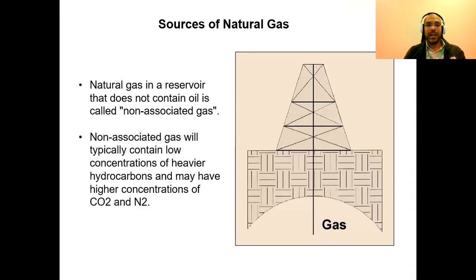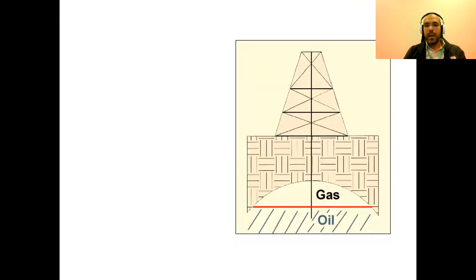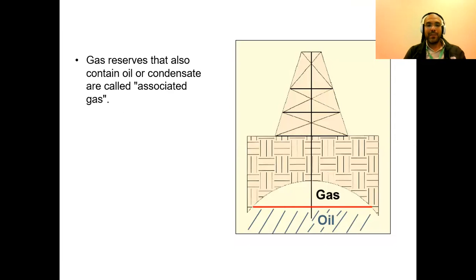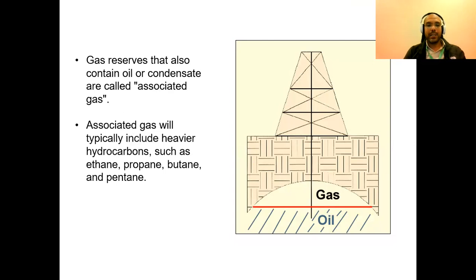Gas reserves that also contain crude oil or condensate are called associated gas. Associated gas typically includes heavier hydrocarbons such as ethane, propane, butane — shorthand C2, C3, C4, and C5. We have now defined what is natural gas as a fossil fuel beneath the earth's crust, and differentiated between associated and non-associated gases.